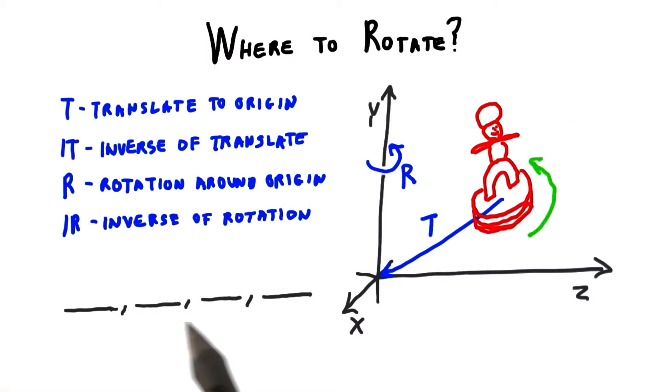Put the transforms in the usual right to left order, rightmost being applied to the object first. If you don't need all four slots for matrices, just leave the leftmost ones empty. For example, if you needed just a single transform, put it in this rightmost slot.